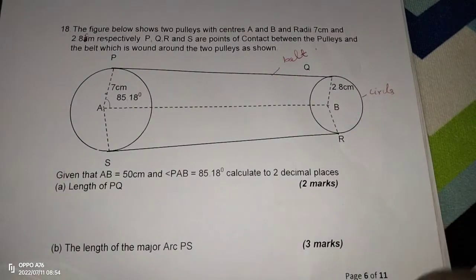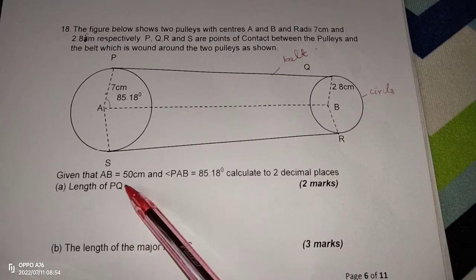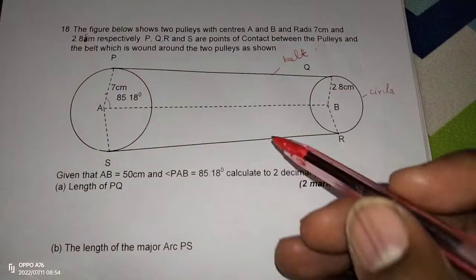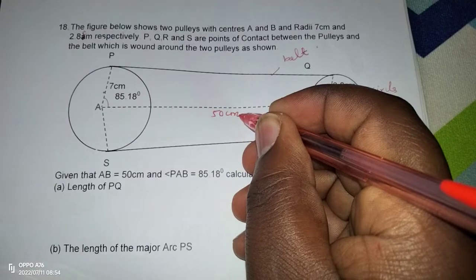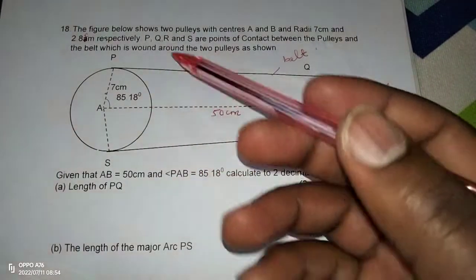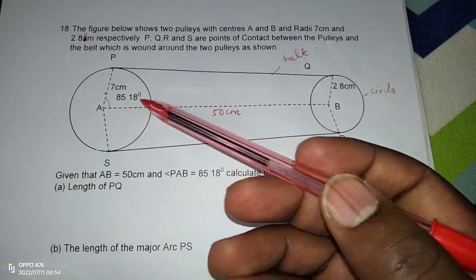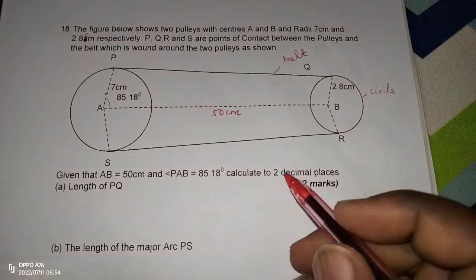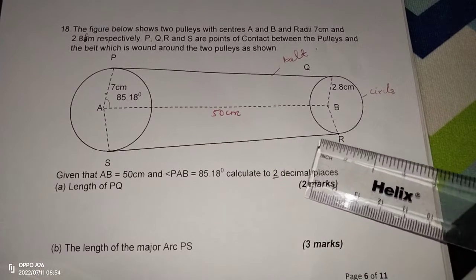So now we are given that the length AB is 50 cm. Then we are also given the angle PAB as shown. This angle is 85.18°. Calculate to two decimal places the length of PQ.